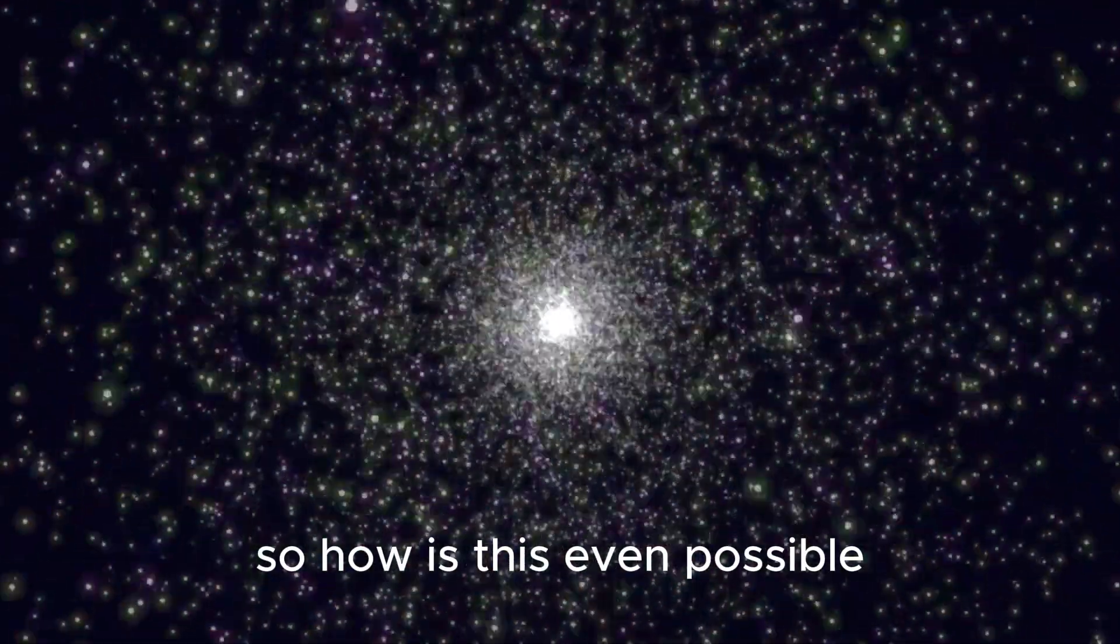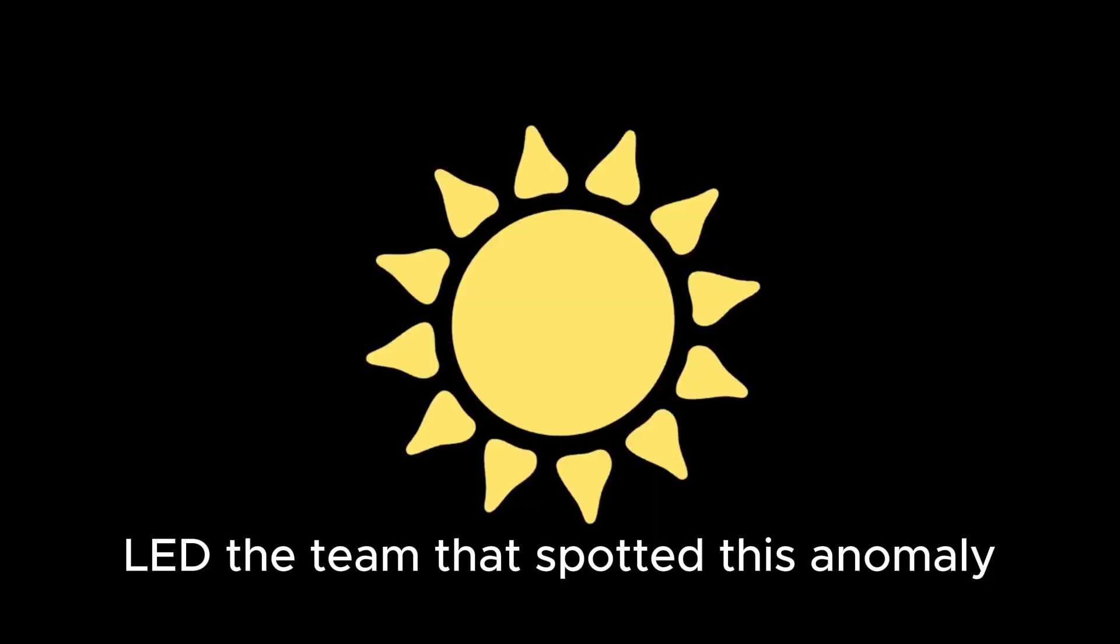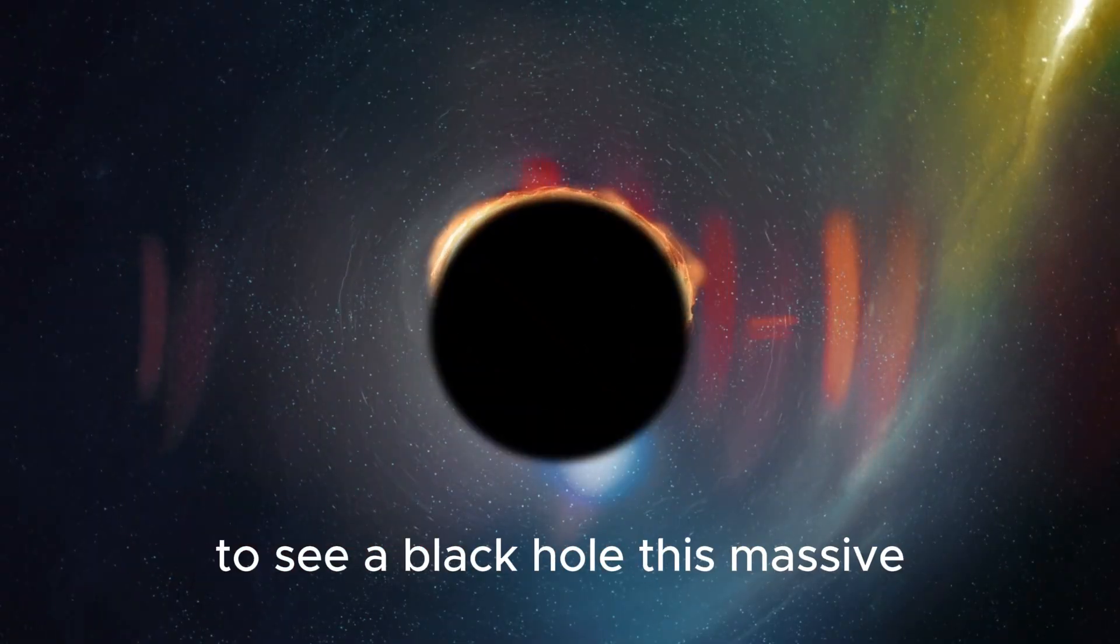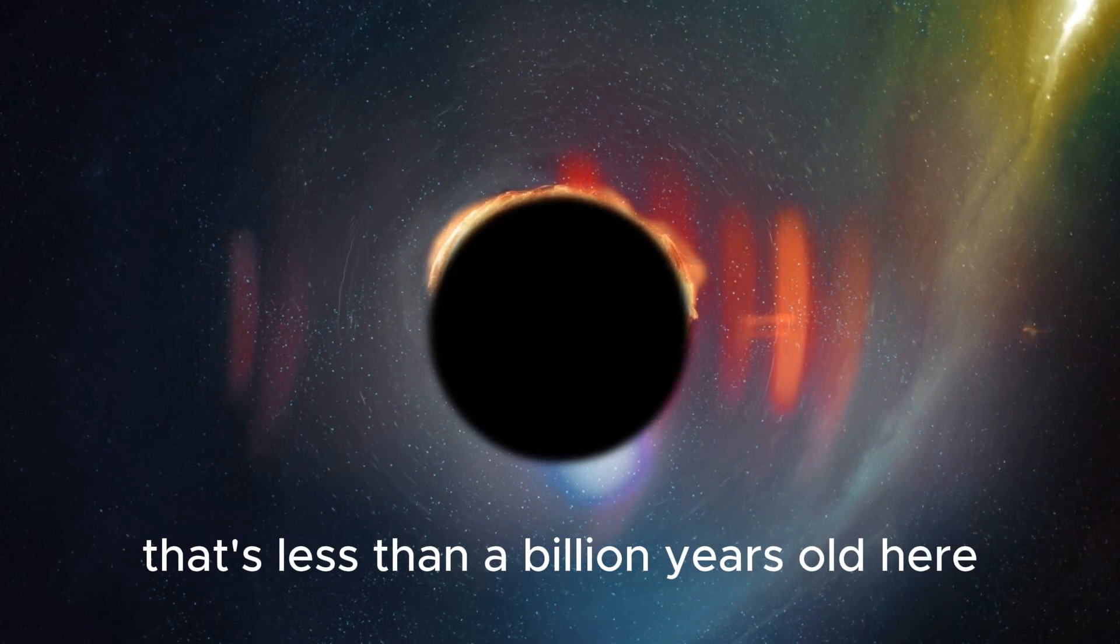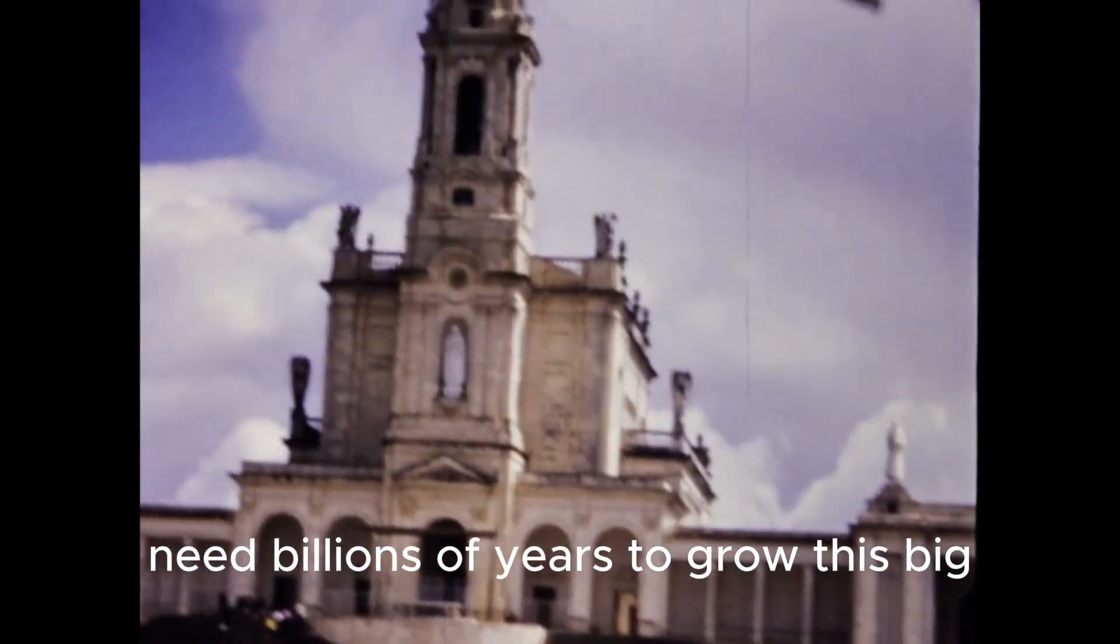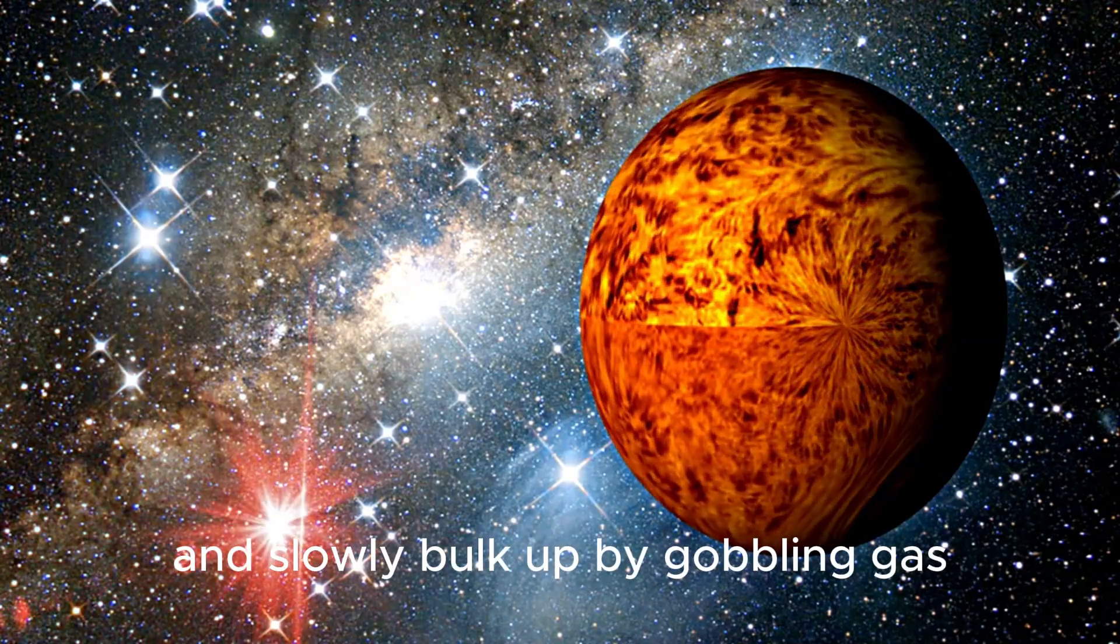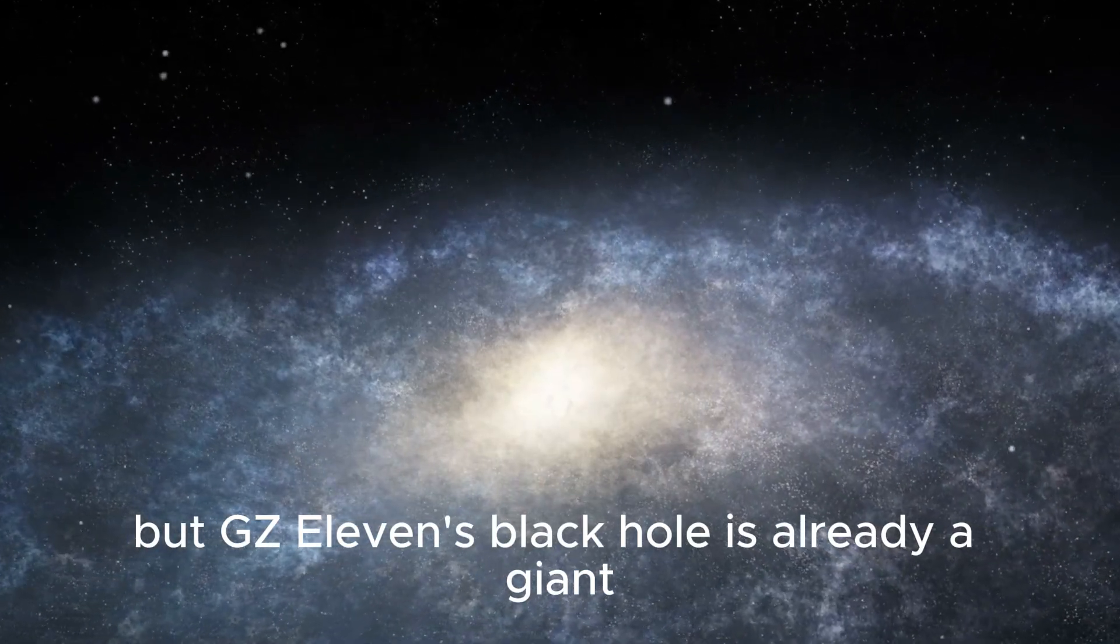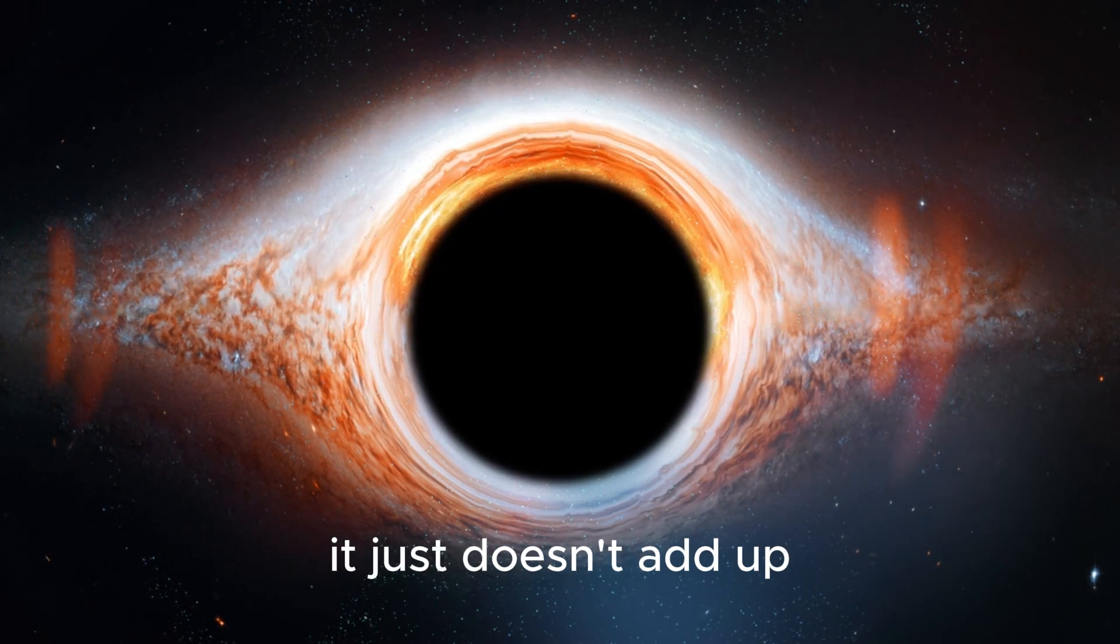So how is this even possible? Roberto Meolino, a big name in astrophysics from the University of Cambridge, led the team that spotted this anomaly, and he called it a game changer. He said, it's way too early in the universe to see a black hole this massive and eating this fast. We're talking about a universe that's less than a billion years old here. Conventional wisdom says supermassive black holes need billions of years to grow this big. They start as smaller black holes, maybe a few hundred times the sun's mass, and slowly bulk up by gobbling gas or merging with other black holes. But GNZ-11's black hole is already a giant, and it's not slowing down. It's like finding a fully grown T-Rex in a dinosaur nursery. It just doesn't add up.